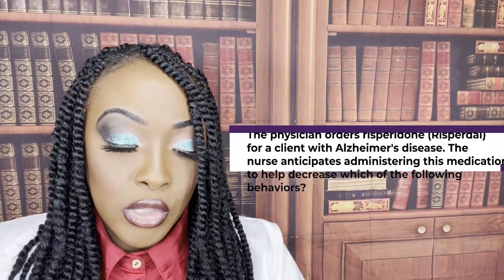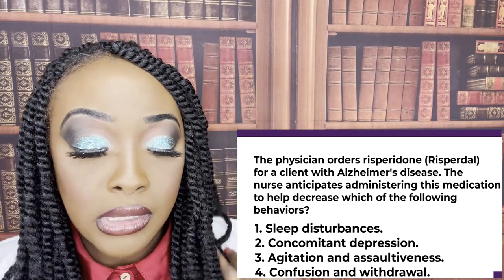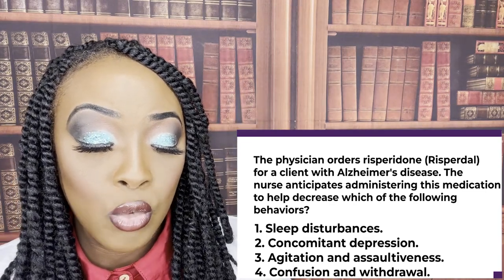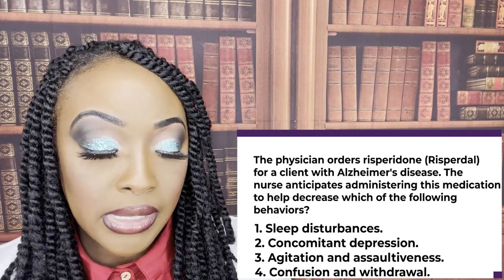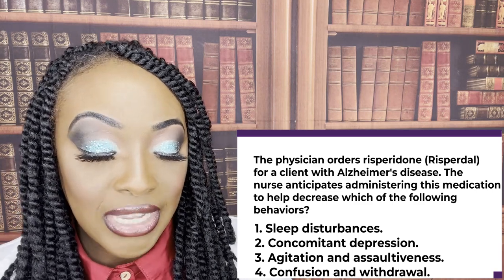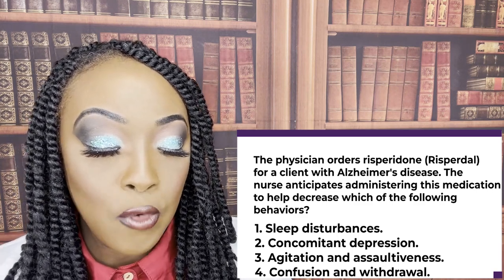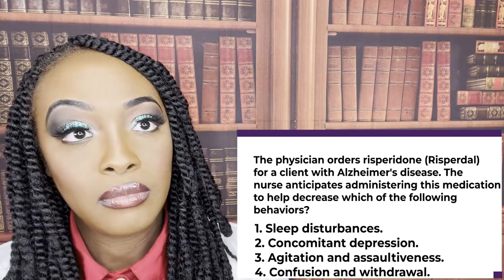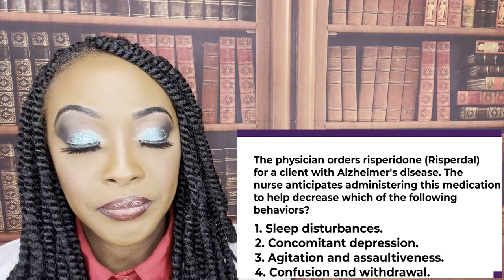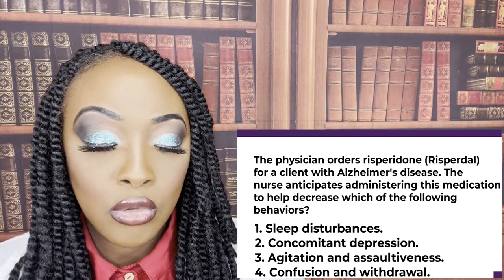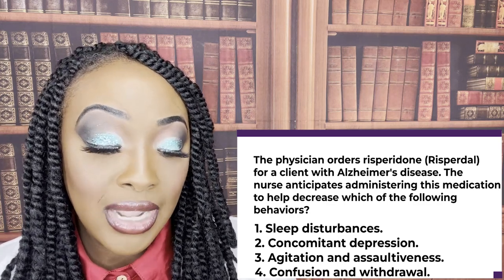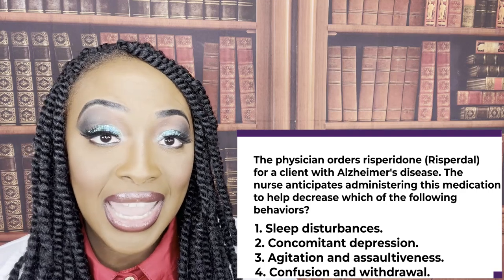Ninth question. The physician orders Risperidone (Risperdal) for a client with Alzheimer's disease. The nurse anticipates administering this medication to help decrease which behavior? One, sleep disturbances; two, concomitant depression; three, agitation and assaultiveness; four, confusion and withdrawal. Risperidone is an antipsychotic medication, so the correct answer is three — agitation and assaultiveness.